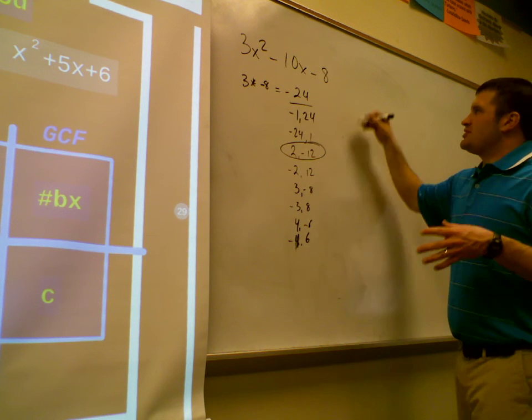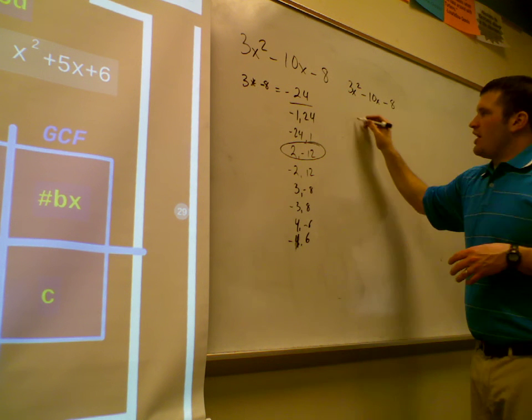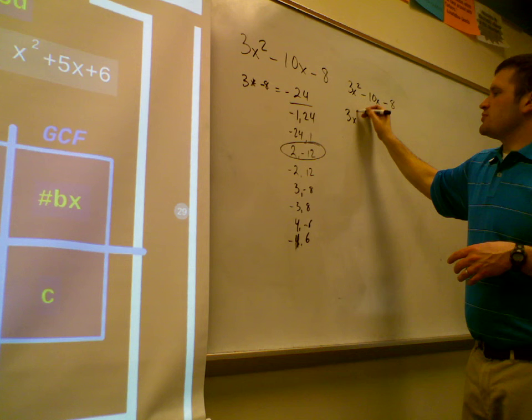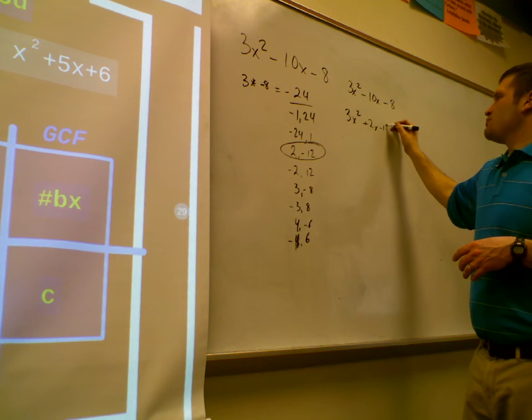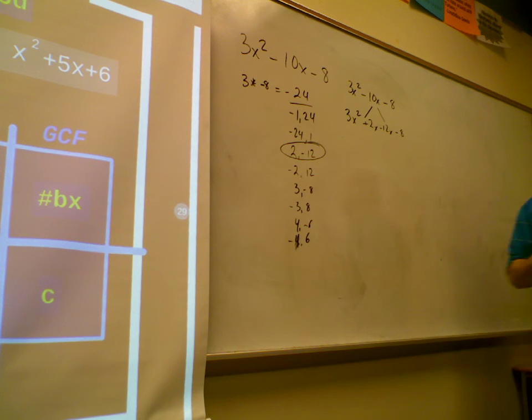So I'm going to take the 3x squared minus 10x minus 8. I'm going to expand that to include 3x squared plus 2x minus 12x minus 8. The 2 and the 12 came from the 10. Does that make sense?